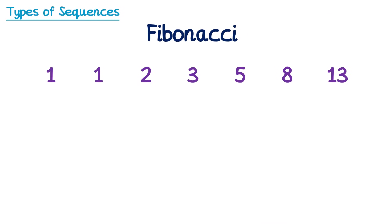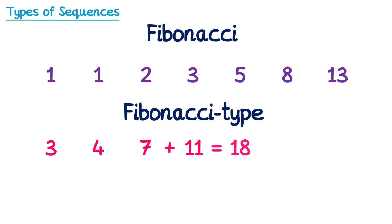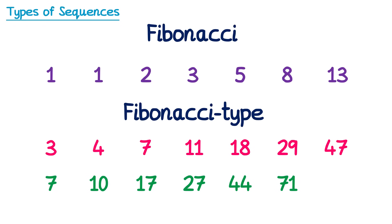This is the Fibonacci sequence, but you can also get Fibonacci-type sequences that follow the same rule but start with different numbers. For example, starting with 3 and 4: 3+4=7, 4+7=11, 7+11=18, 11+18=29, 18+29=47. Or starting with 7 and 10: 7+10=17, 10+17=27, 17+27=44, and so on. So there are many different Fibonacci-type sequences that all follow the same rule.